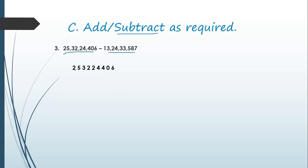I will take the second number and arrange it according to the place names of each digit. I arranged seven in ones, eight in tens, five in hundreds, three in thousands, one more three in ten thousands, four in lakhs, two in ten lakhs, three in crores, one in ten crores. This way we arranged both numbers in column wise.